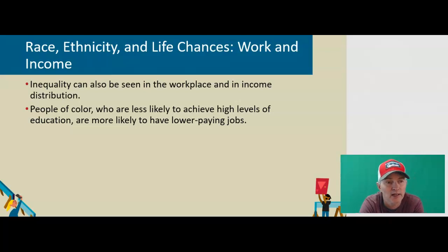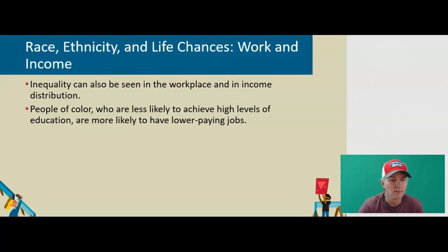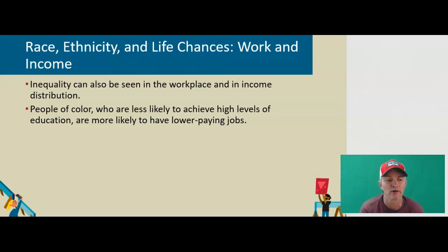How does this impact work and income? Inequality can also be seen in the workplace and in income distribution. People of color who are less likely to achieve high levels of education are more likely to have lower paying jobs. In 2016, the median U.S. income for Asian Americans was $81,431; for white Americans, $65,041; Hispanics, $47,675; and for African Americans, $39,490. In 2016, 9% of whites lived below the poverty line compared with 22% of African Americans and 19% of Hispanics. You're starting to see how race and ethnicity can adversely impact certain populations.